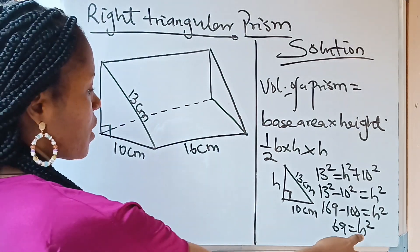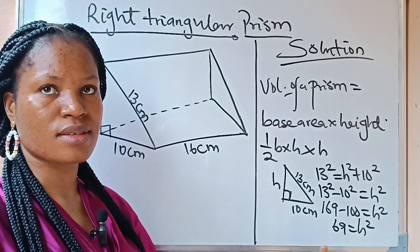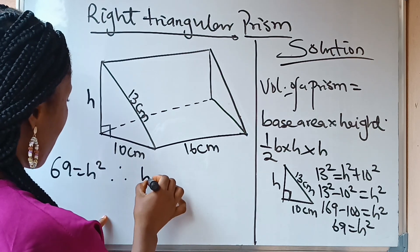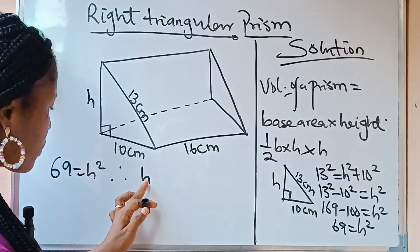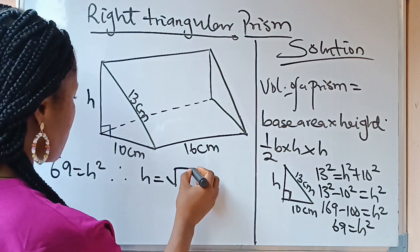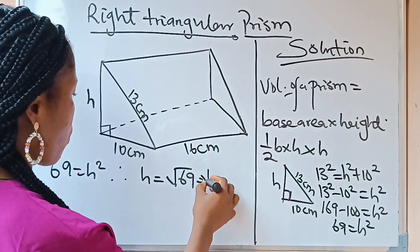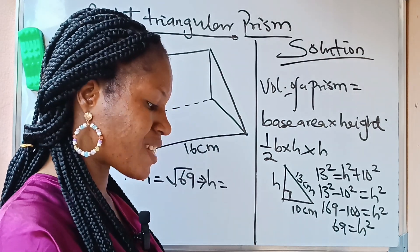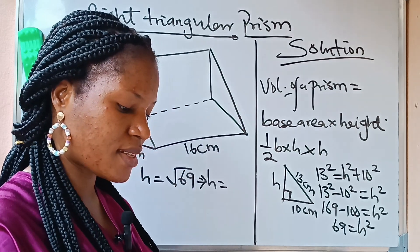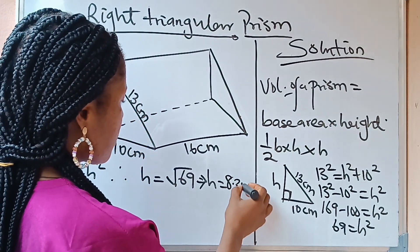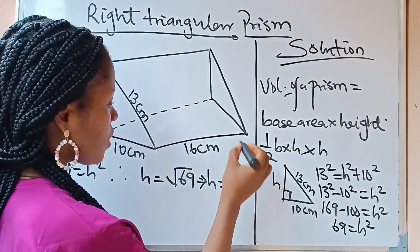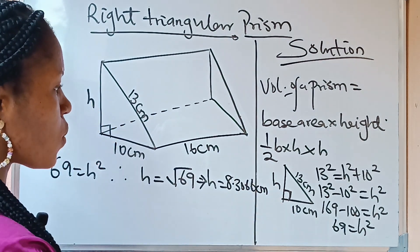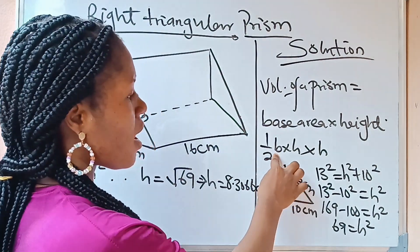To get h, we take the square root of both sides. So h equals the square root of 69, which gives us approximately 8.3066. Therefore h is equal to 8.3066 centimeters.